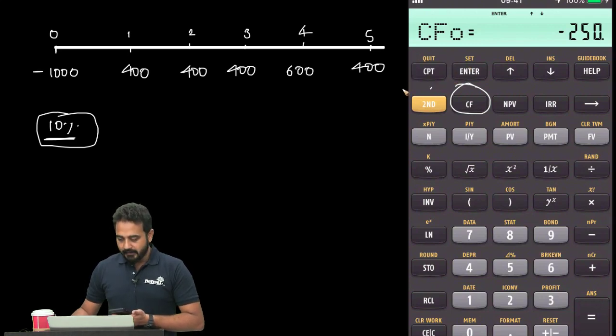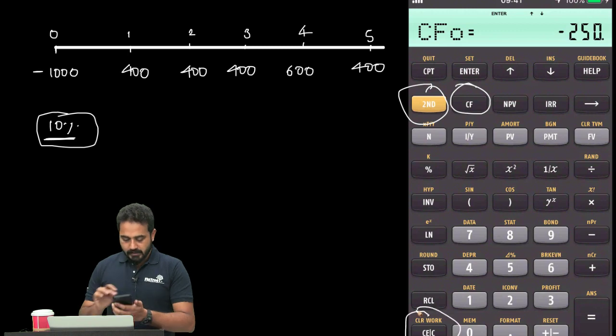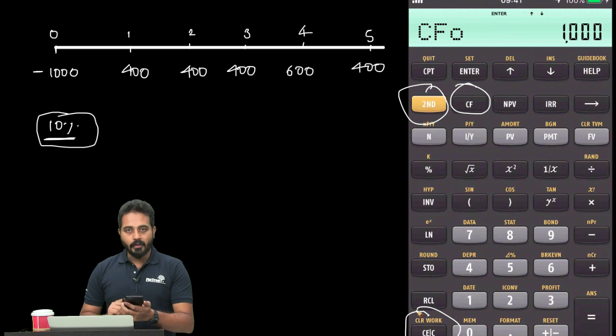After pressing Second and Clear Work, now for CF0, I'll press 1000.